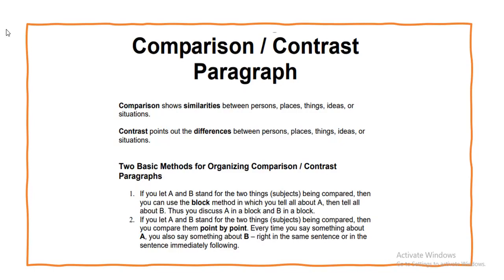Number two — if you let A and B stand for the two things or subjects being compared, you compare them point by point. That is, every time you say something about A, you also say something about B, written in the same sentence or in the sentence immediately following.